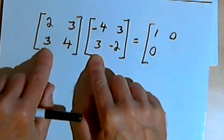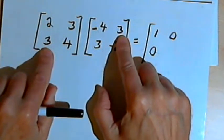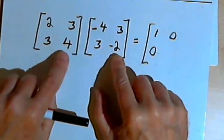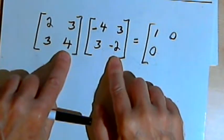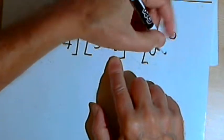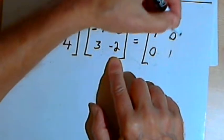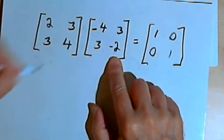Finally I want to multiply 3 times 3, which is 9, and 4 times negative 2, which is negative 8. 9 minus 8 is 1. And I've ended up with the identity matrix.